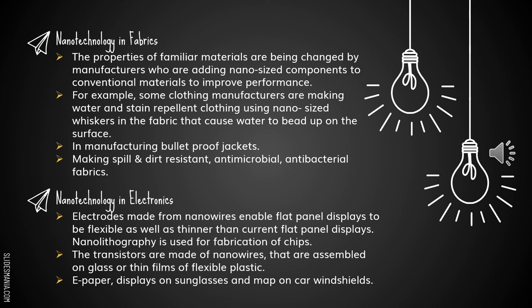Nanotechnology in fabrics: manufacturers are adding nano-sized components to conventional materials to improve performance. For example, some clothing manufacturers are making water and stain-repellent clothing using nano-sized whiskers in the fabric that cause water to bead up on the surface. Nanotechnology is also used in manufacturing bulletproof jackets, and in making spill and dirt-resistant, antimicrobial and antibacterial fabrics.